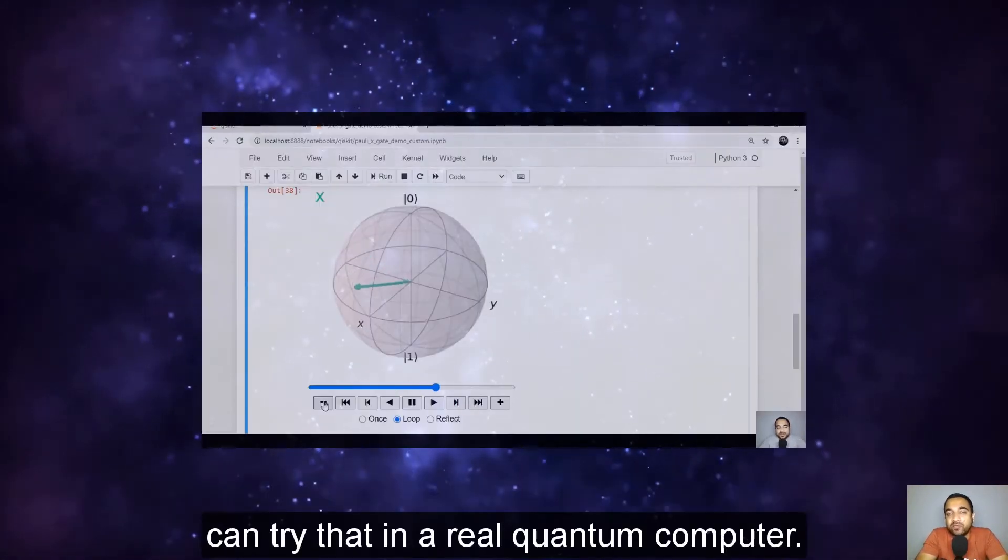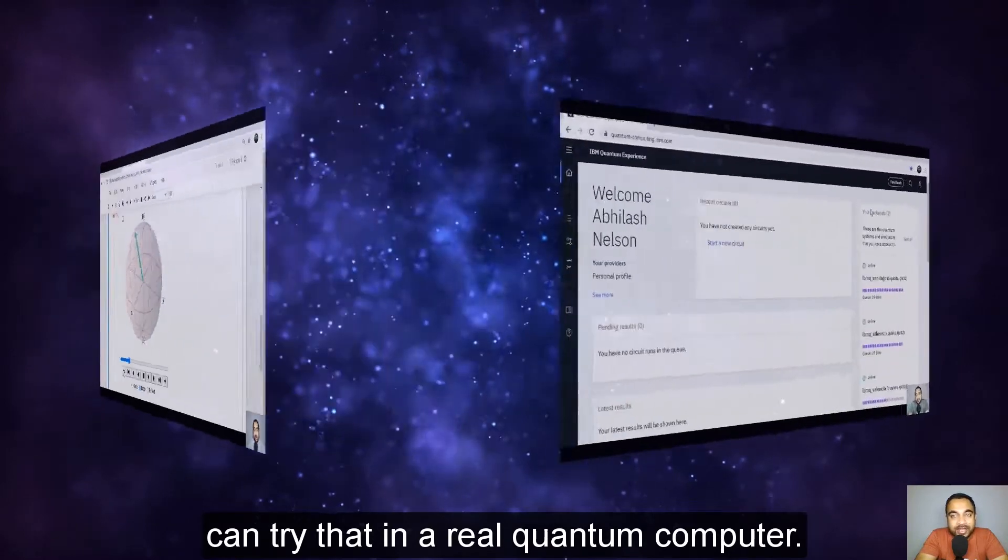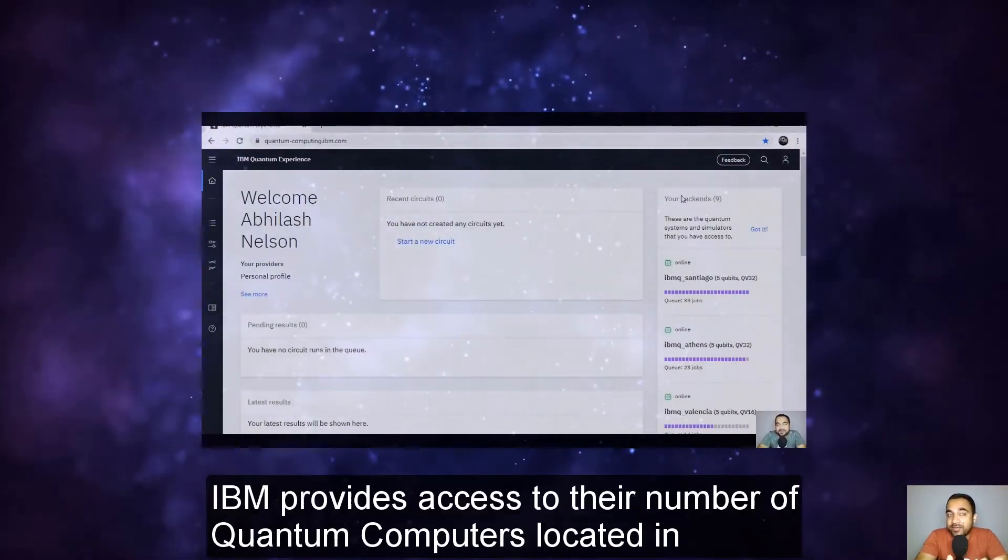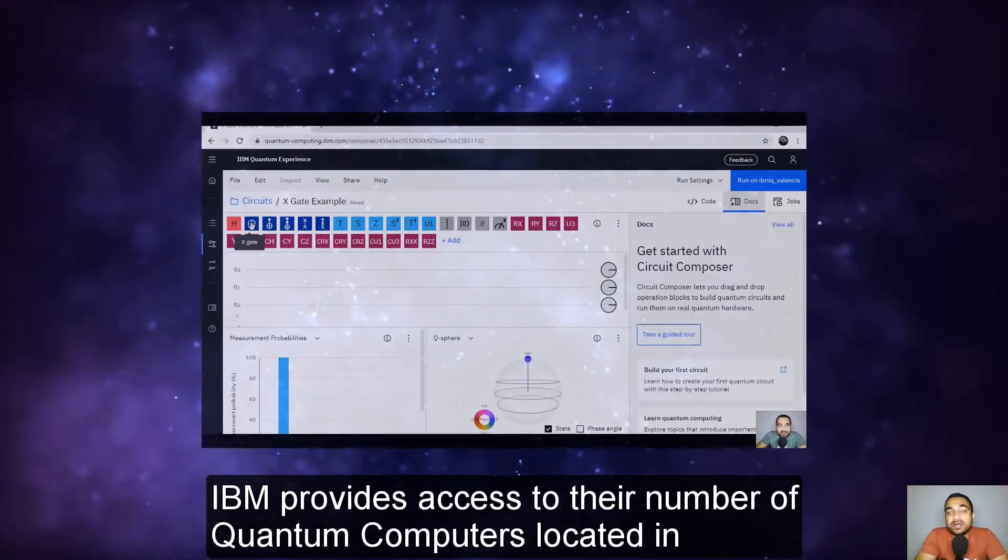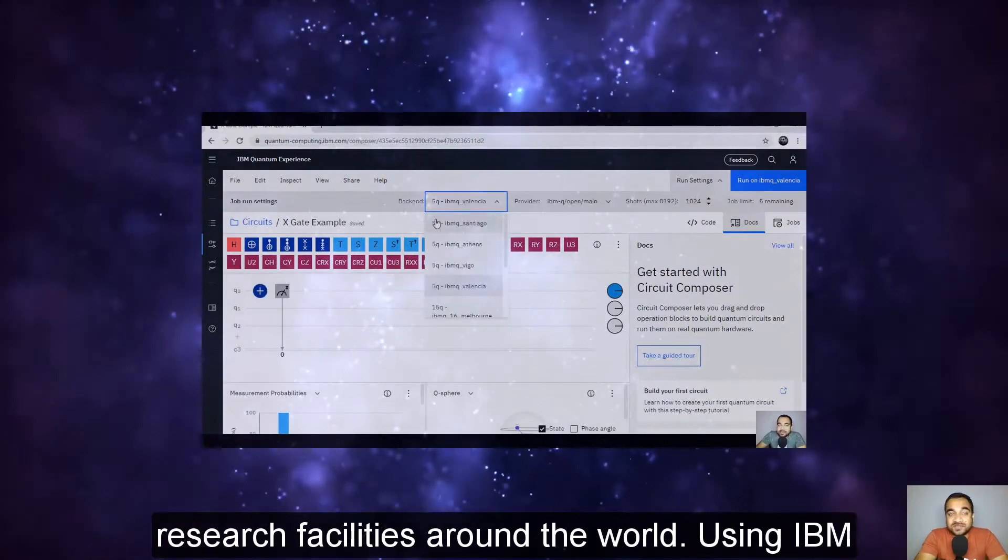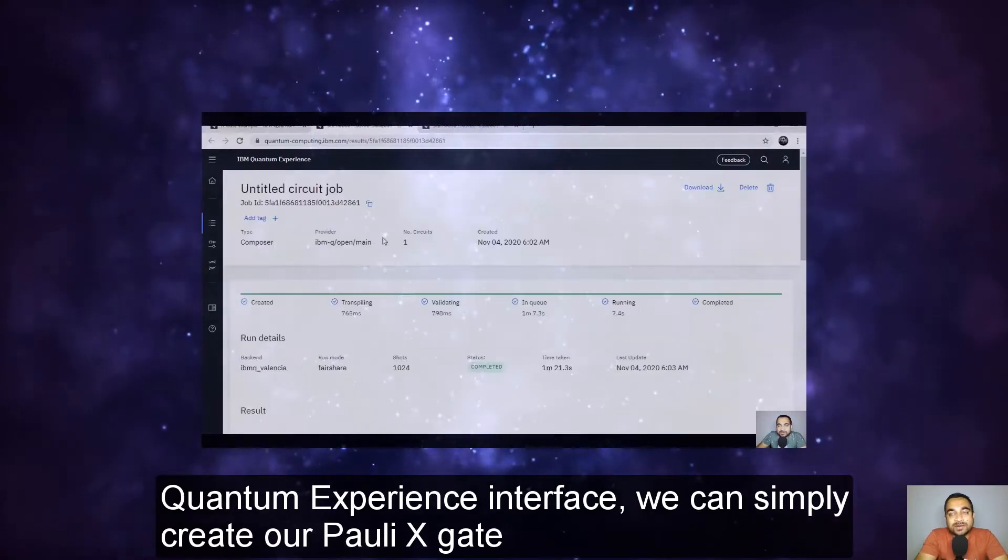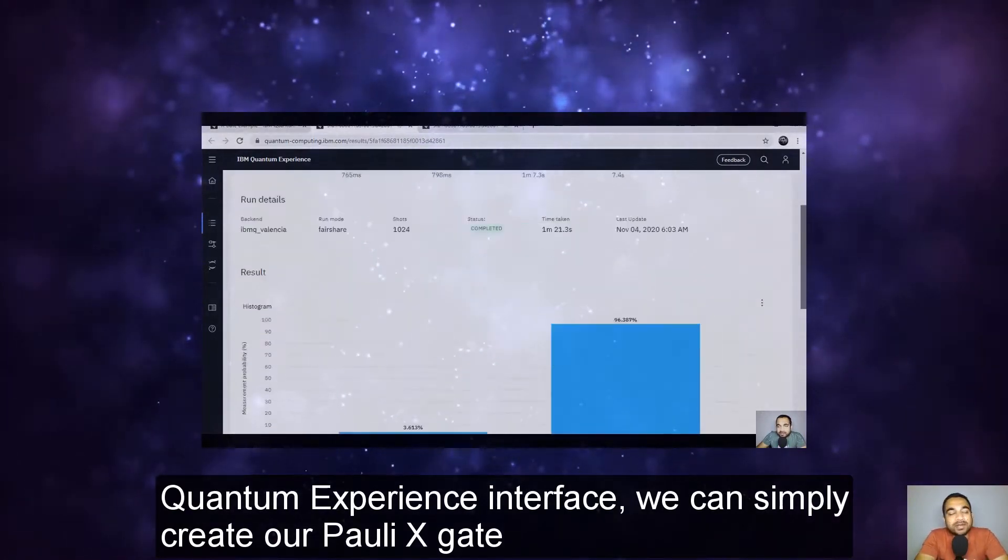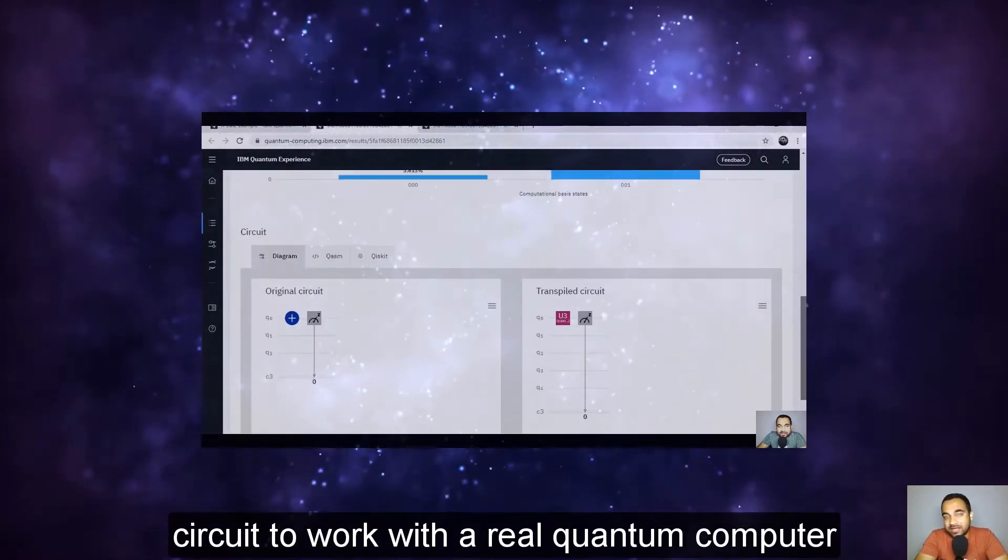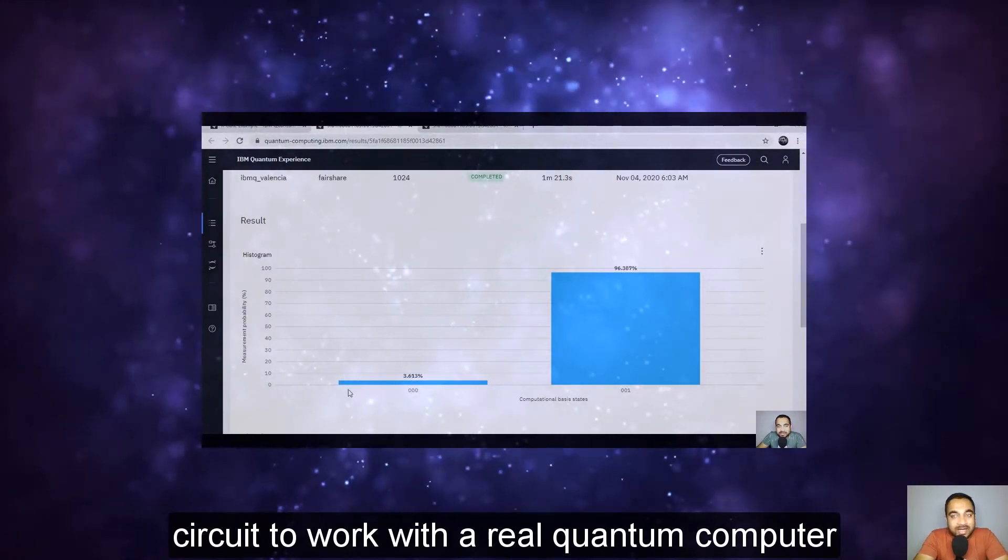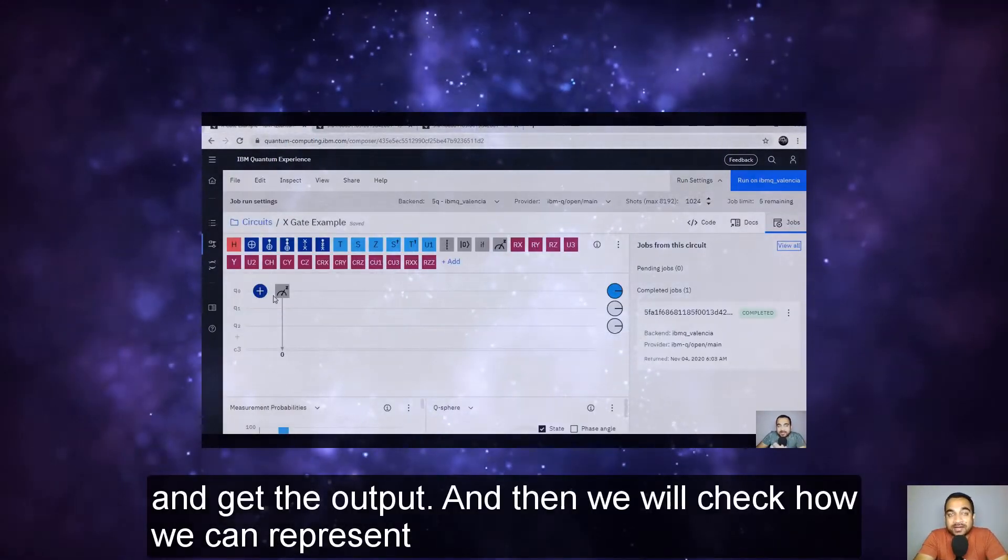And once we verify it in the simulator, it's time we can try that in a real quantum computer. IBM provides access to their number of quantum computers located in research facilities around the world. Using IBM Quantum Experience interface, we can simply create our Pauli X gate circuit to work with a real quantum computer and get the output.